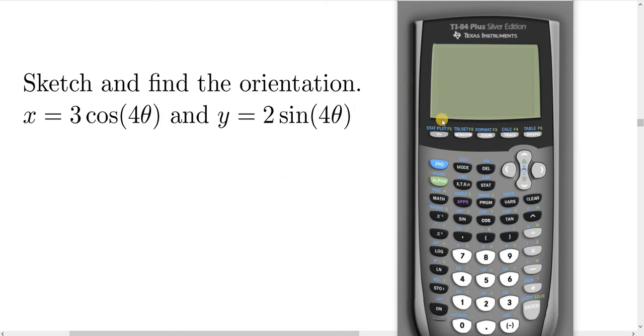Now we need to go to the graphing screen. On the TI-84, that's where it says Y equals. So we click on Y equals. Here we have X1T, Y1T, X2T, Y2T, etc.